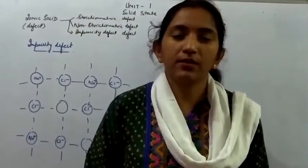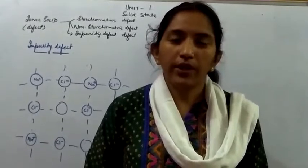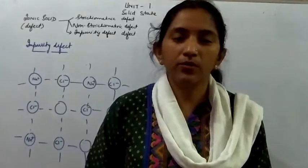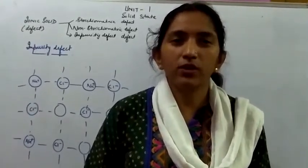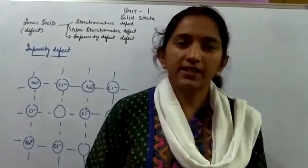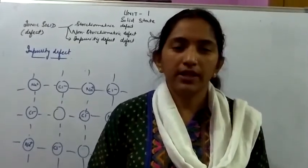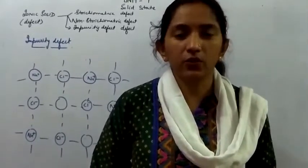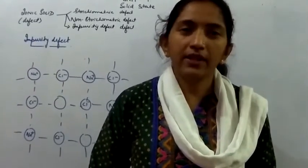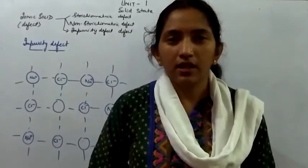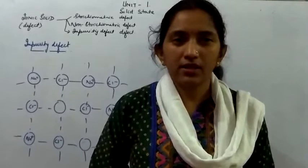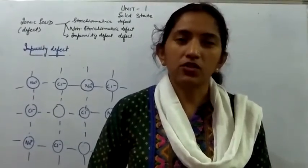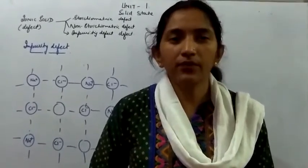The next type of defect is the impurity defect. Whenever an ionic solid is mixed with certain impurities, a vacancy is created. For example, when NaCl is melted and its melt is mixed with strontium chloride SrCl2, then allowed to crystallize: two sodium ions become vacant, the strontium ion is placed in one vacancy, and the other remains empty.